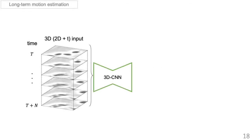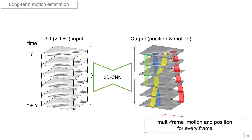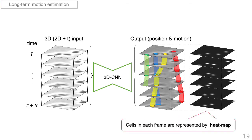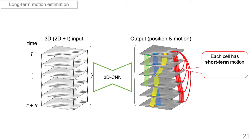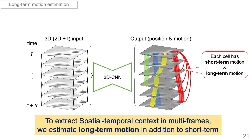Our network is a 3D CNN that estimates motion and a position map for every frame. We represent cell position by heat map and jointly estimate short-term motion for each cell. However, long-term context is not always used for short-term motion estimation, so this alone is not enough to effectively use long-term information. To extract spatio-temporal context in multi-frames, we estimate long-term motion in addition to short-term motion. Long-term motion is not directly used for tracking, but it helps the network extract long-term context.